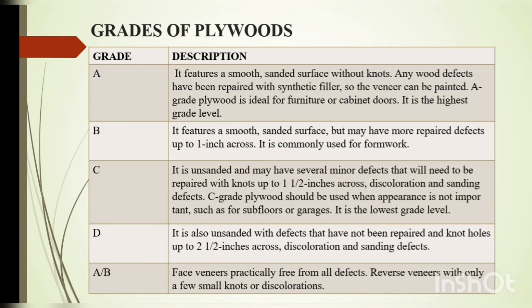Grades of plywood. They are basically classified into grades A, B, C and D. Features of A graded plywood are: smooth, sanded surface without knots. Any wood defects have been repaired with synthetic filler so the veneer can be painted. A grade plywood is ideal for furniture or cabinet doors and is the highest grade level. B grade features a smooth, sanded surface but may have more repair defects up to 1 inch across and is commonly used for formwork. C grade is unsanded and may have several minor defects with knots up to 1.5 inches across, discoloration and sanding defects. C grade plywood should be used when appearance is not important, such as floors or garages, and is the lowest grade level.